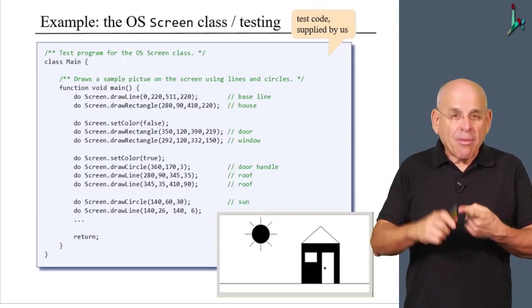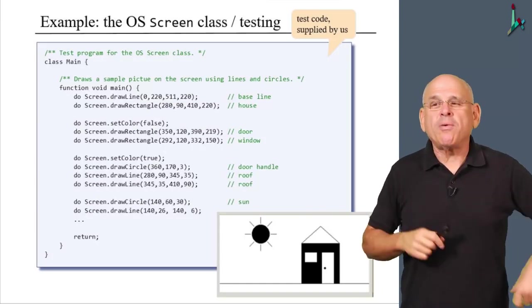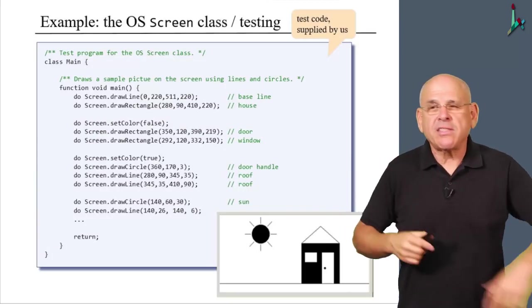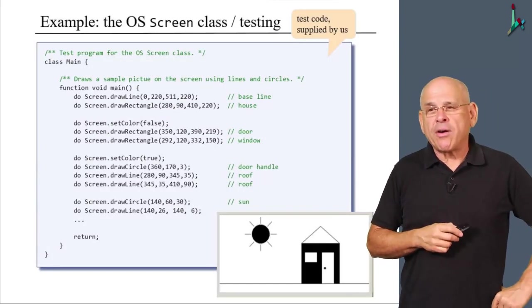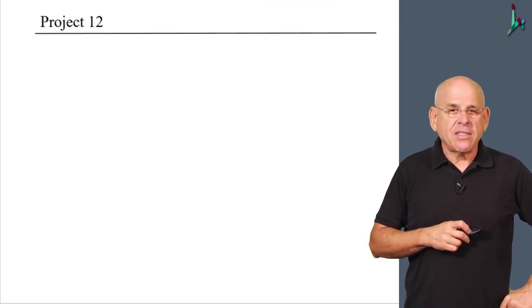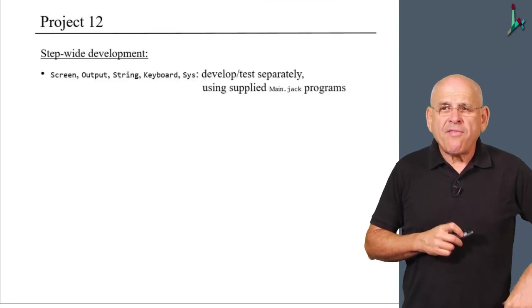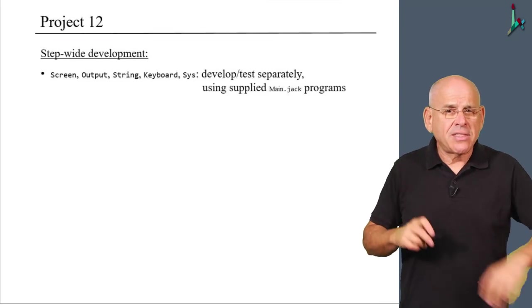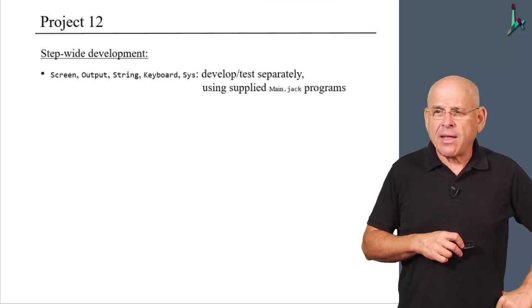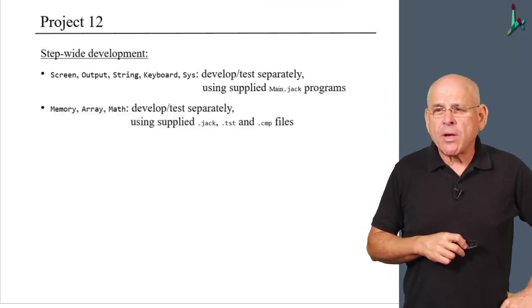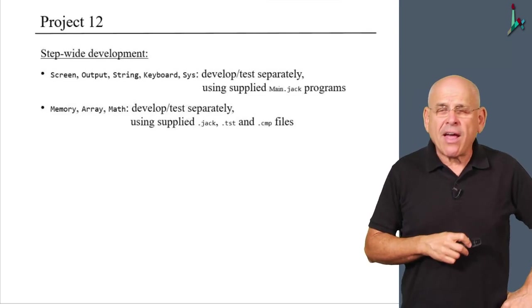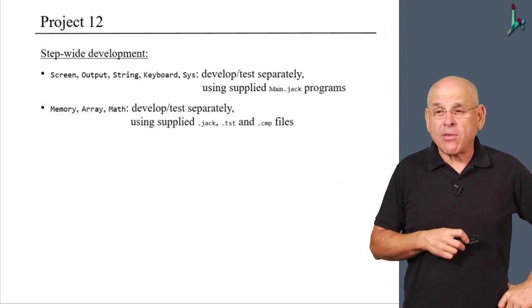So we are going to provide the stub file and the test file, and it's your job to implement the stub file and bring it to a level that it can service the test file to your and our satisfaction. Now, that's what you have to do with every one of the eight classes in the operating system. So five of these classes are going to be designed in exactly the same technique, using a supplied stub file and the supplied main.jack, and the remaining three classes will be tested slightly differently using both Jack, TST, and compare files.